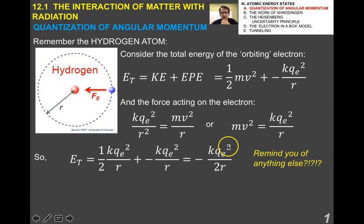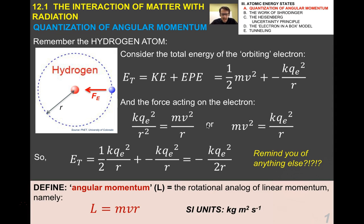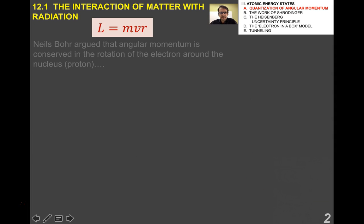This should remind you of the relationship between kinetic energy and total energy of an orbiting satellite. In effect, we're treating the electron as a satellite orbiting another mass. The idea of angular momentum is very similar to linear momentum — we had linear momentum as mass times velocity. Angular momentum is mass times velocity times the radius of the circle, and the variable we give angular momentum is capital L. The SI units are kilogram meters squared per second.